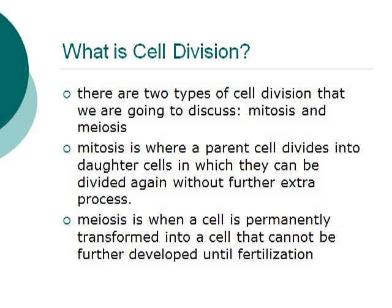There are two types of cell division that we are going to discuss in this series: mitosis and meiosis. Mitosis is where a parent cell divides into daughter cells which can be divided again without any extra processes. Meiosis, on the other hand, is when a cell is permanently transformed into another cell that cannot be further developed until fertilization.